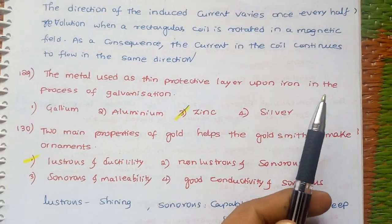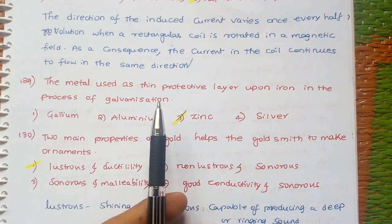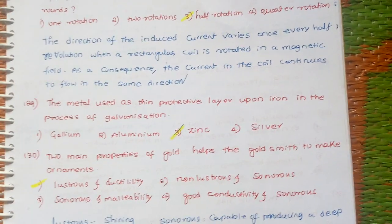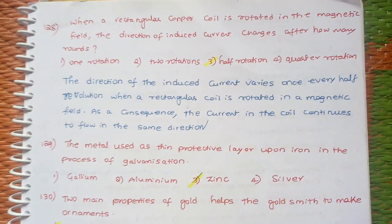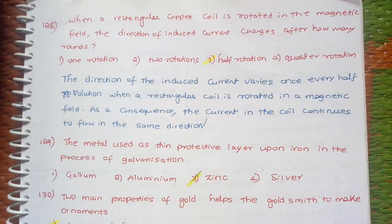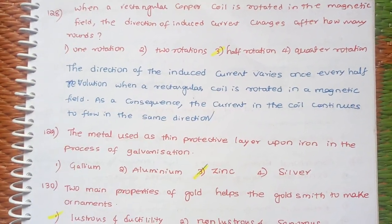The metal used as a protective layer upon iron in the process of galvanization. The answer is zinc. Galvanization process means simply coating iron or steel with zinc. This protects the iron from corrosion.